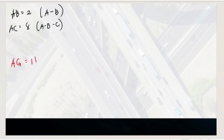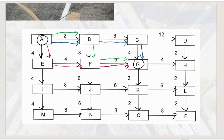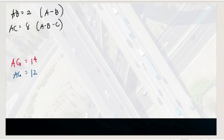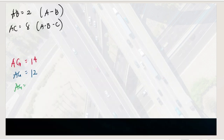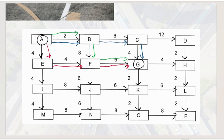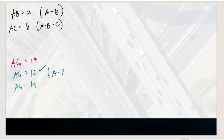Comparing the three paths to city G: the red path (A → E → F → G) = 14 hours; the blue path (A → B → C → G) = 12 hours; the green path (A → B → F → G) = 14 hours. Therefore, the shortest path from A to G is A → B → C → G with 12 hours. You can continue finding shortest paths to other cities as a self-activity.